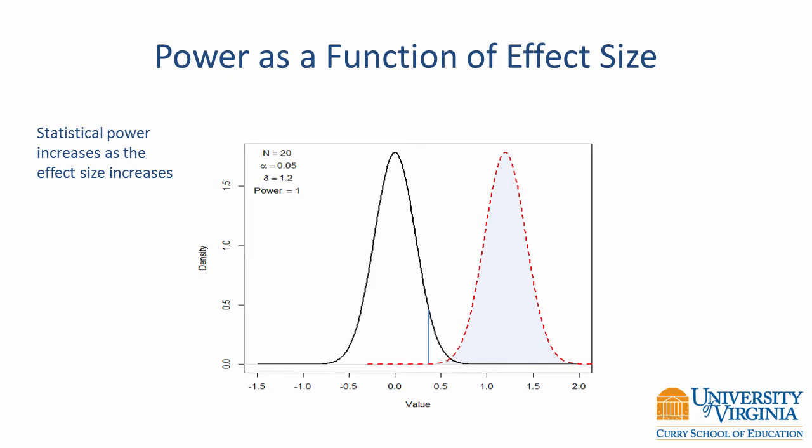It's evident in this figure that the effect size represents the discrepancy between the null and alternative hypothesis. As the effect size increases, the two distributions shift away from each other. This causes an increase in power.